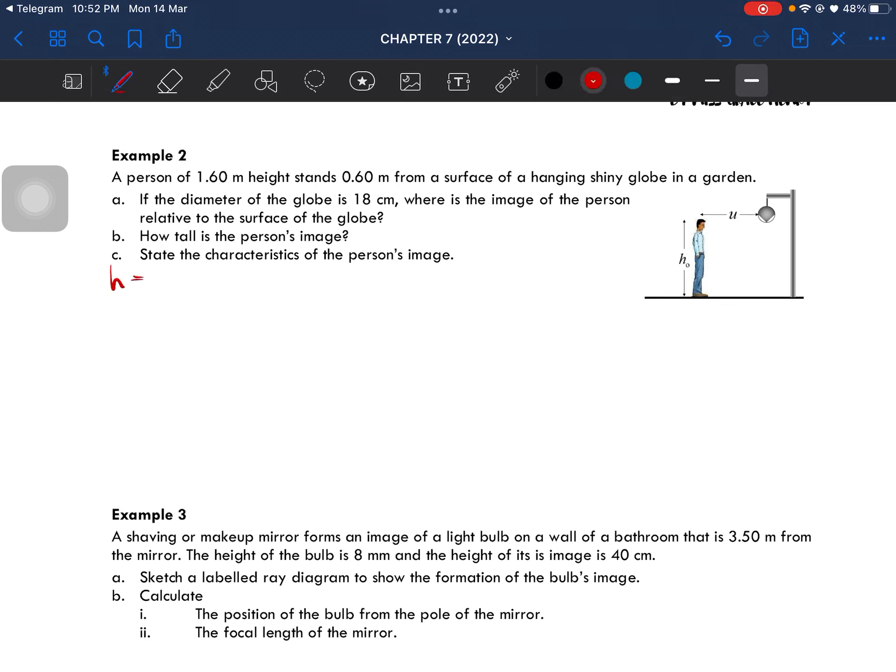Given is the height of the object, which is 1.6 meter, and also the distance from the mirror, which is 0.6 meter. All of this, the mirror - the object is in front of this mirror here, so that's why it is positive.